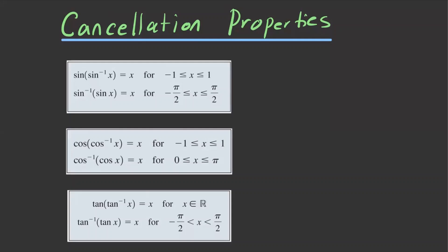We're going to now talk about the cancellation properties for the trigonometric functions sine, cosine, and tangent. There are six of them in total — two for each function: one pair for sine, one pair for cosine, and one pair for tangent.